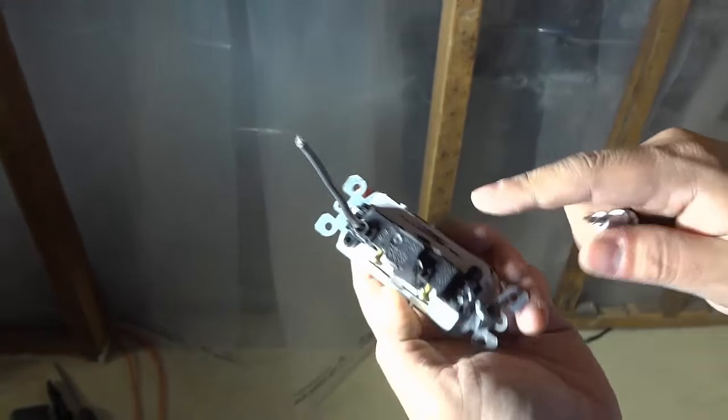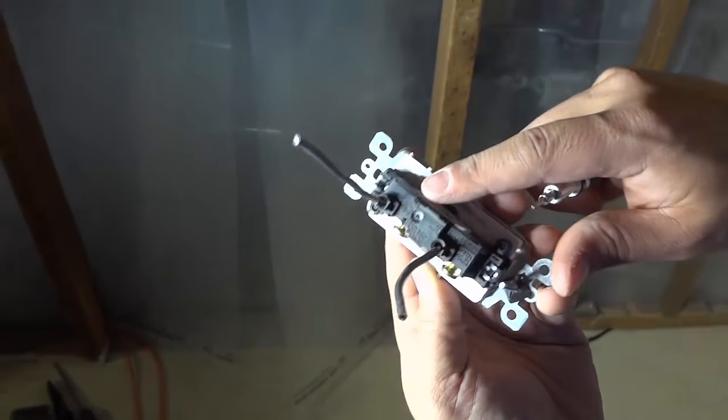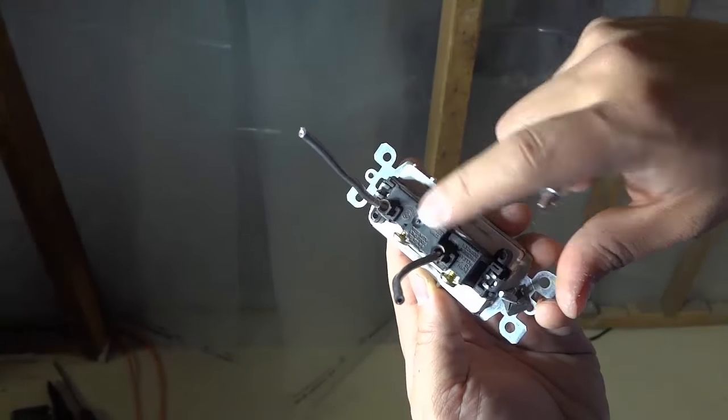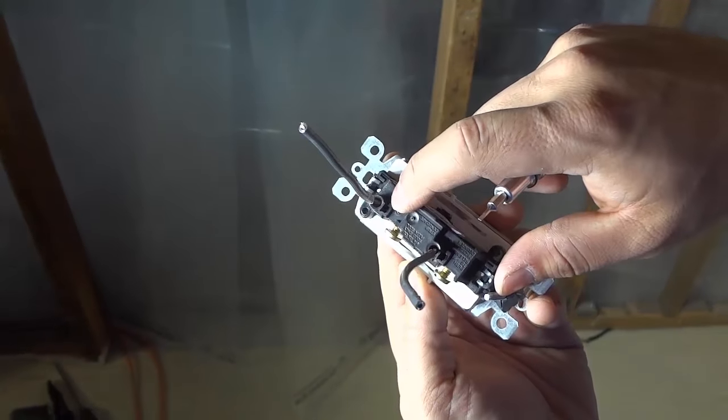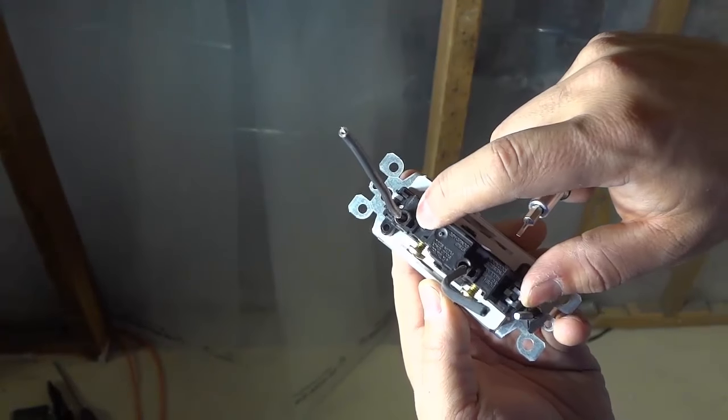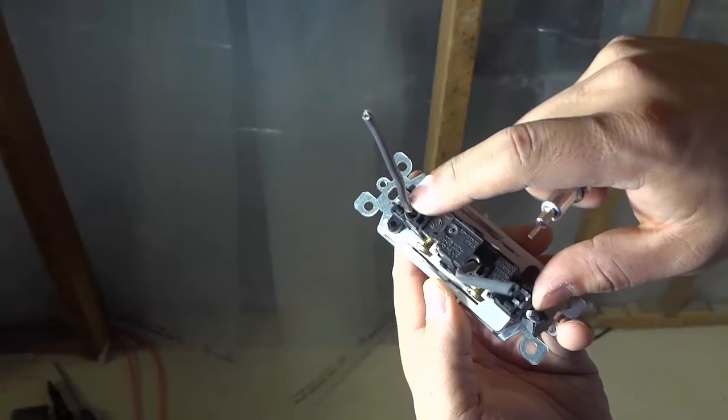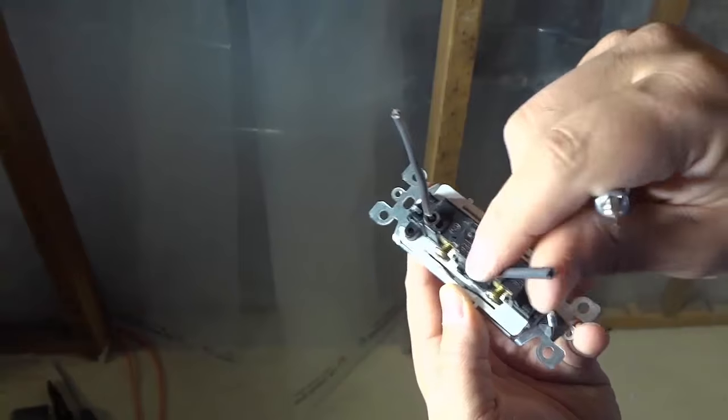So if you have a light switch like this and the electrical wiring has been pushed into these holes at the back of the light switch, what you have to do is look underneath both of the holes and you will see a small slot. Underneath both of those holes is a small slot.